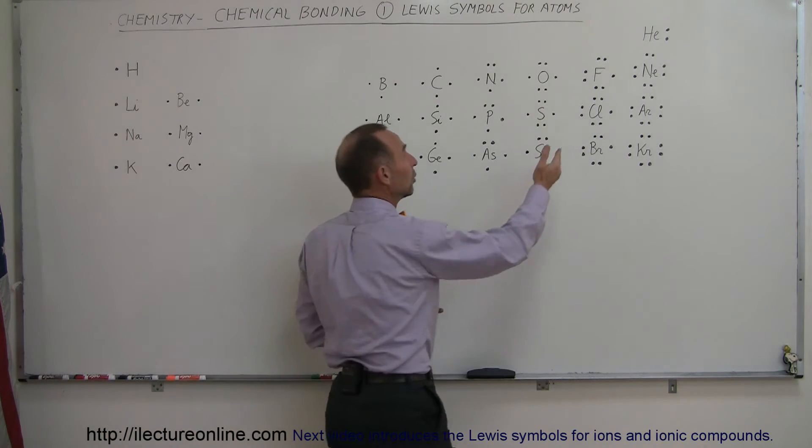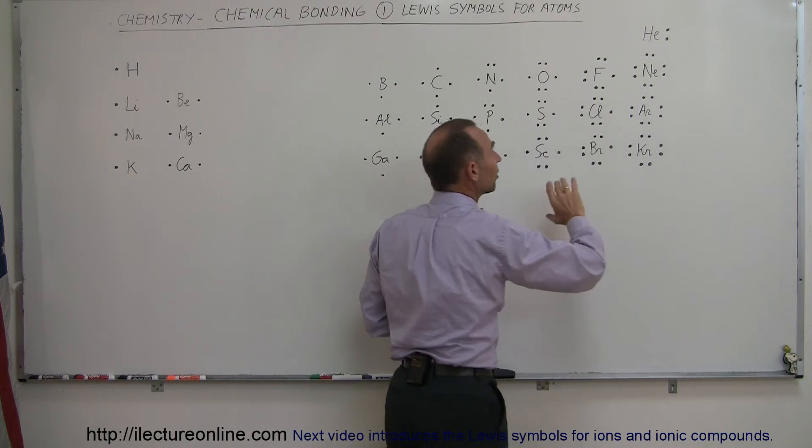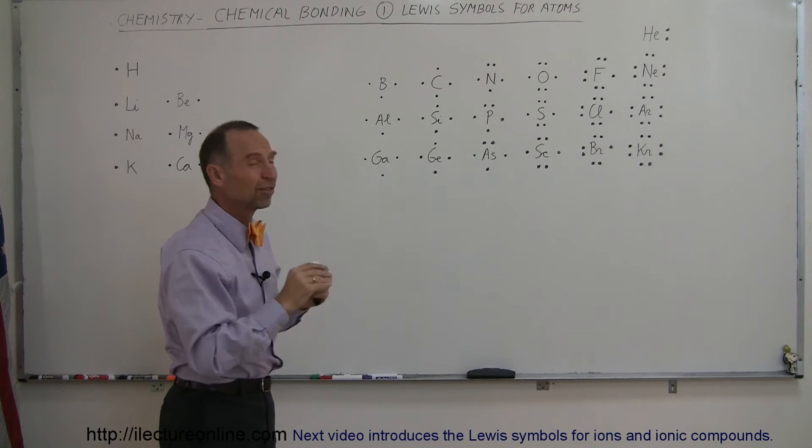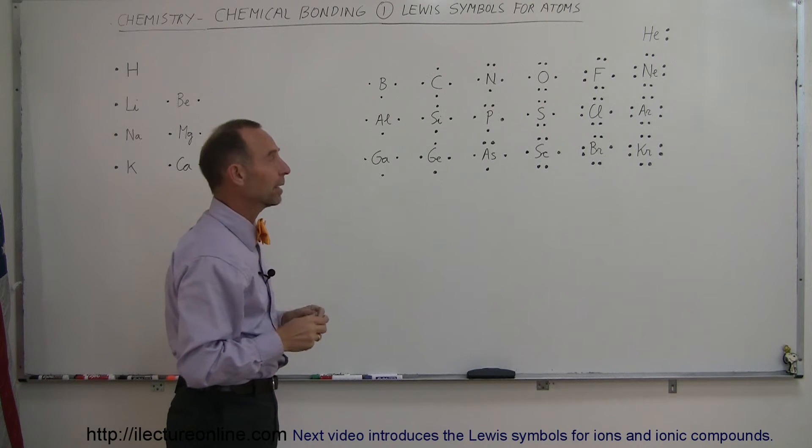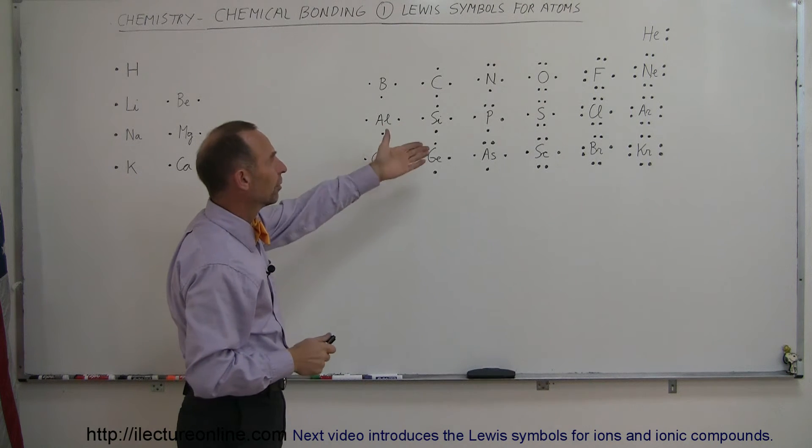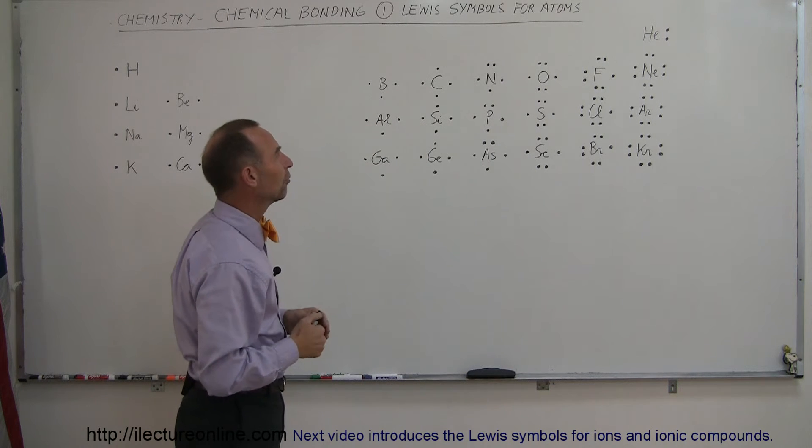So in this case chlorine only shows seven electrons in its outer level and ignores the other ten electrons that are in the first and the second level combined. Same with sulfur, phosphorus, silicon, aluminum, and so forth.